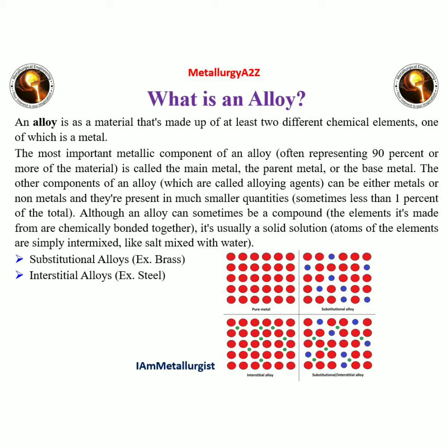Although an alloy can sometimes be a compound — with elements chemically bonded together — it is usually a solid solution. In a solid solution, atoms of the elements are simply intermixed, like salt mixed with water.